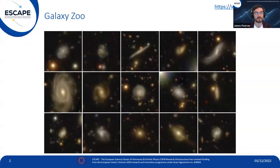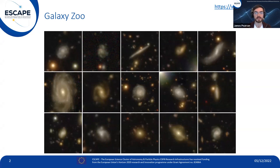One of the core aims of extragalactic astronomy is to study how galaxies form and evolve over cosmic time. Galaxies come in a variety of shapes, from ball-like ellipticals to those with grand spiral arms. To study how they evolve requires a large number of classified galaxies — and this is where citizen science comes in, playing a crucial role in the examination of these large datasets from telescopes.